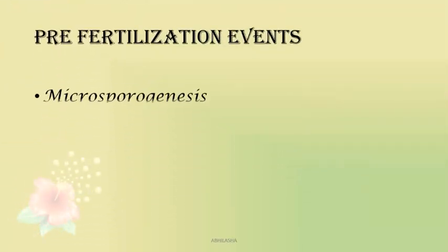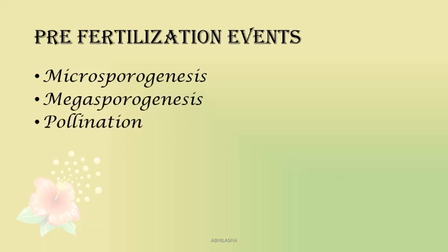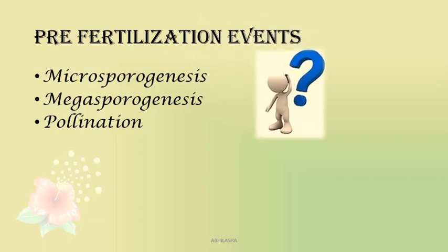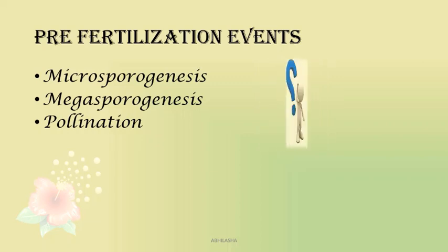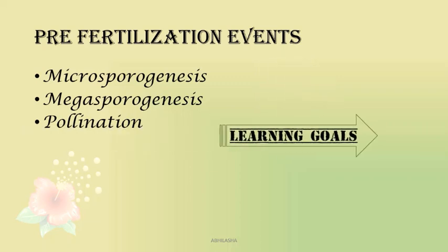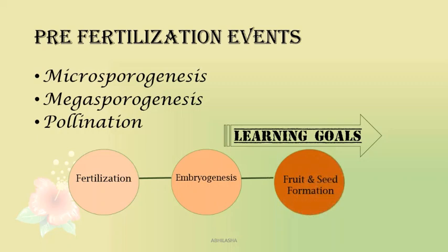We have already covered microsporogenesis, megasporogenesis and pollination, which means that our pollen has landed on the stigma and the compatibility issues have also been resolved. The next step is fertilization and post-fertilization events, and that is our learning goal for today. If compatible pollen lands on the stigma, fertilization will occur leading to embryogenesis and fruit and seed formation.